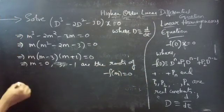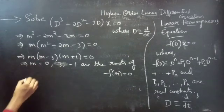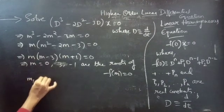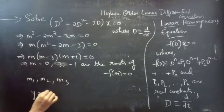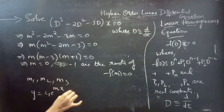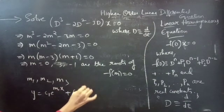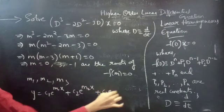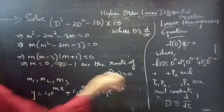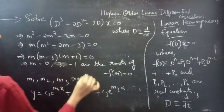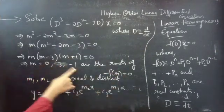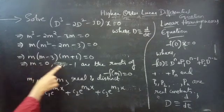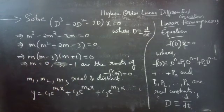For the general solution: if the auxiliary equation has roots m₁, m₂, m₃ that are real and distinct, then the solution is y = c₁e^(m₁x) + c₂e^(m₂x) + c₃e^(m₃x). Here we have no repeated roots and all roots are real and distinct.